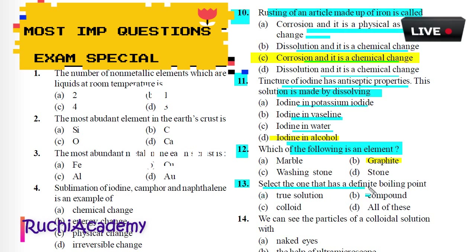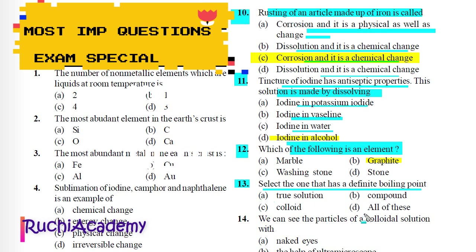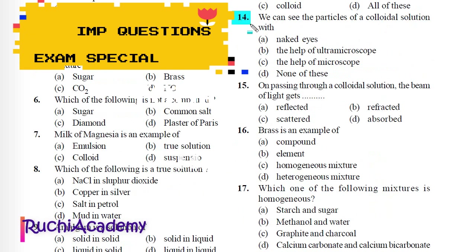Question 13: Select the one that has a definite boiling point: A) True solution, B) Compound, C) Colloid, D) All of these. Correct answer is B) Compound. Compounds have a definite boiling point.